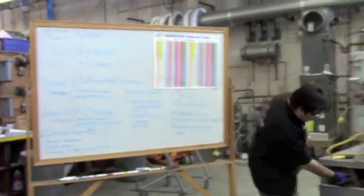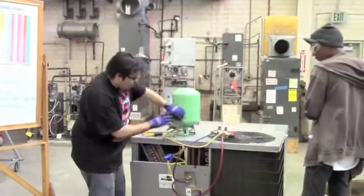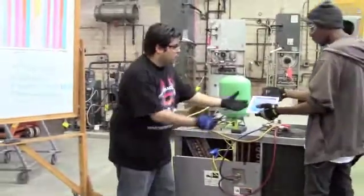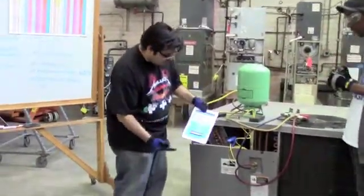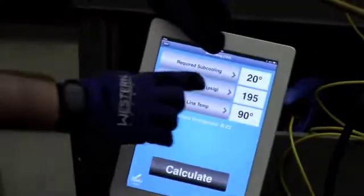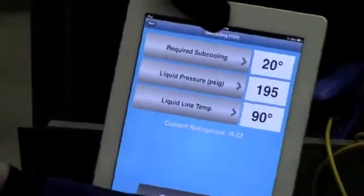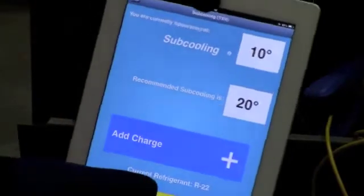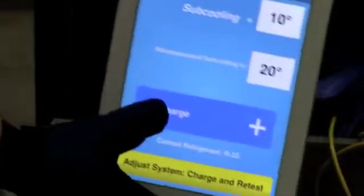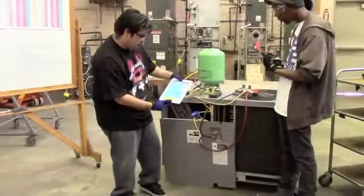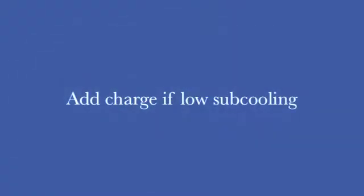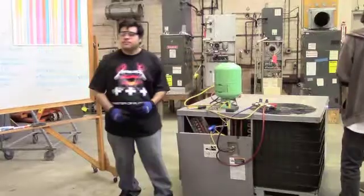So, we put in our clamp. We clamp it on the liquid line. And we physically measure the temperature. So, we get our app and we put in the variables. We put in our required subcooling provided by the manufacturer, our liquid line pressure, and our liquid line temperature. And we just click calculate. And right here, it will tell me how much subcooling I need and how much subcooling I have. And it will either tell me to add or subtract.